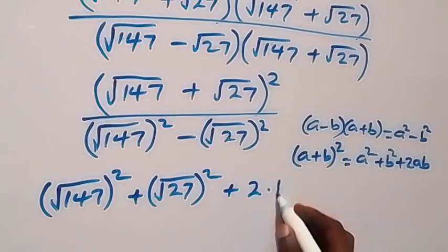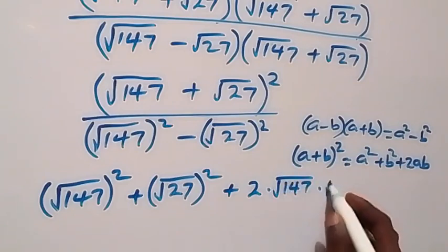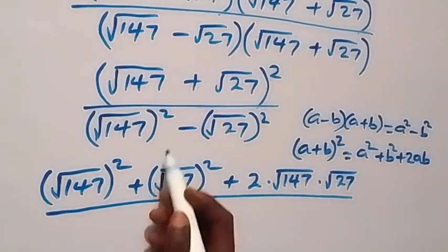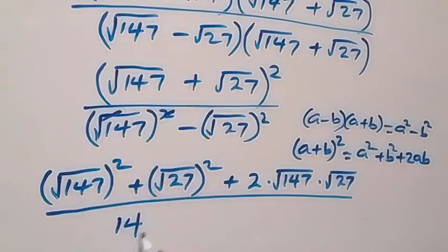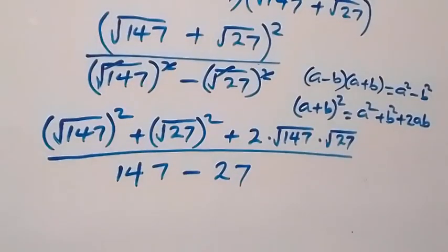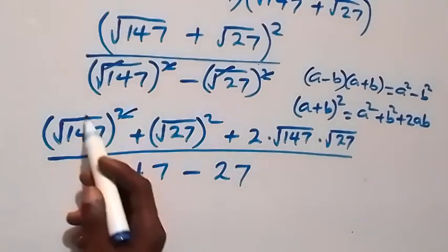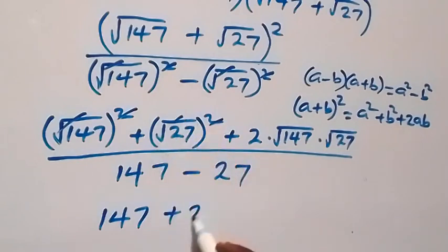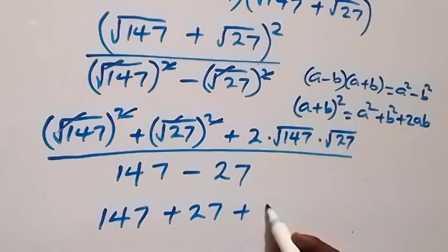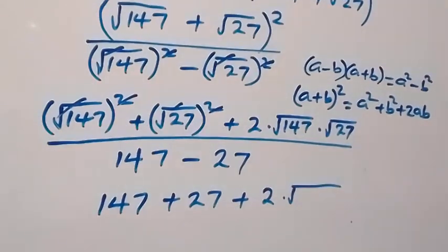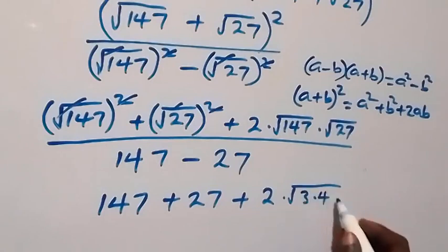We cancel the square roots and we have 147 there. The numerator becomes 147, and we cancel the square roots, plus 27, then plus 2 times root 147 times root 27. We can write 147 as 3 times 49 and 27 as 3 times 9.